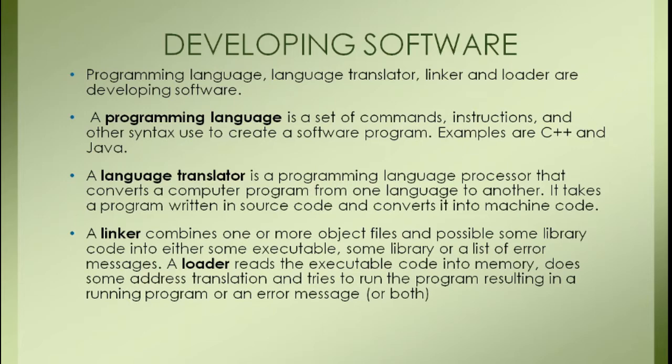When you create your software program, the second category is called a language translator. In the language translator, the program you have created in high-level language will be transformed into low-level language. This is called a language translator — it can also be called a compiler or interpreter. After that, the categories of linker and loader come. The four components are: programming language, language translator, linker, and loader.